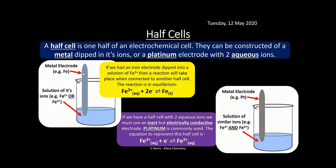Sometimes both components are aqueous — for example Fe2+ and Fe3+ — and there is no metal electrode. In that case we use a platinum electrode, because platinum is inert (it doesn't react with the chemicals) and it is a good conductor of electricity, allowing current to travel up into the voltmeter.